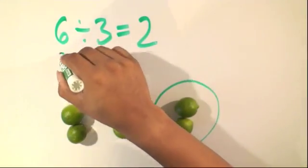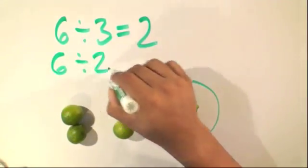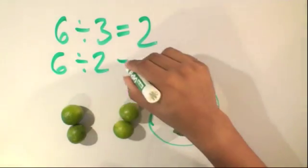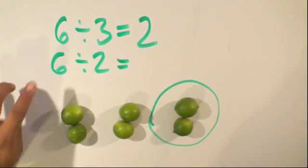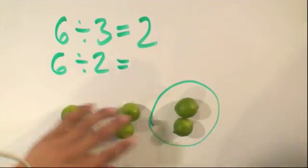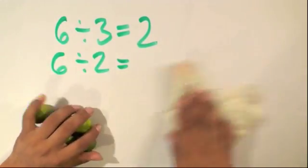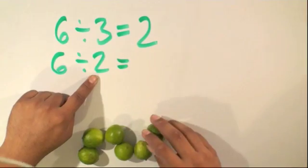Let's take a look at another problem. We'll have 6 divided by 2, and we can see that we still have the same number of limes. But this time, we're going to divide equally by 2.